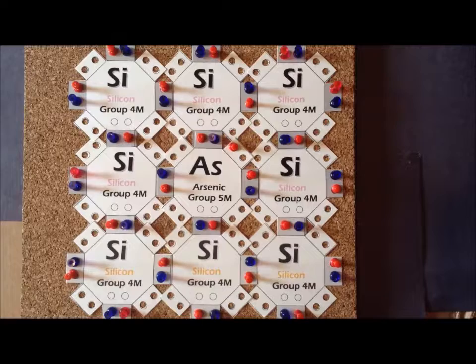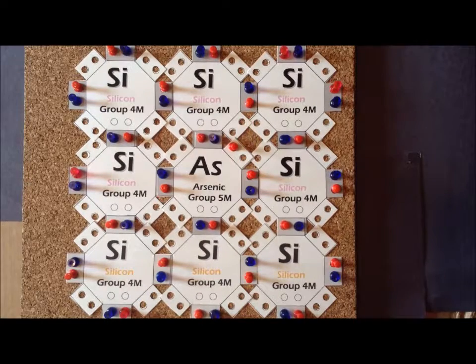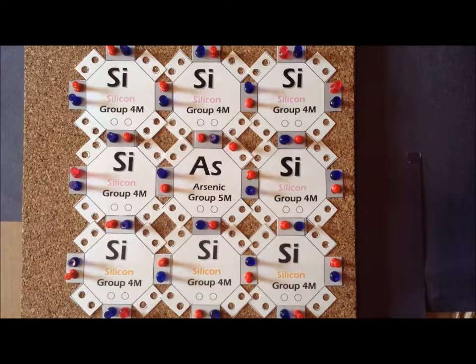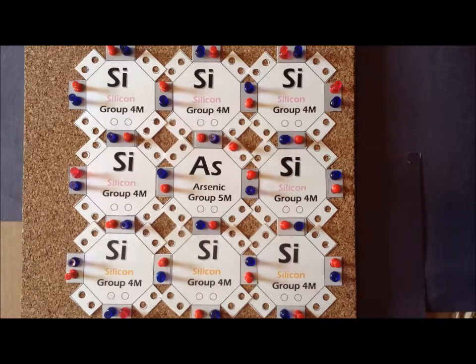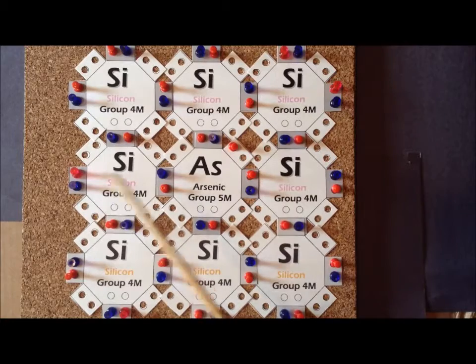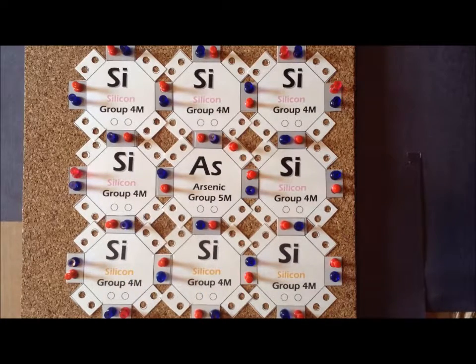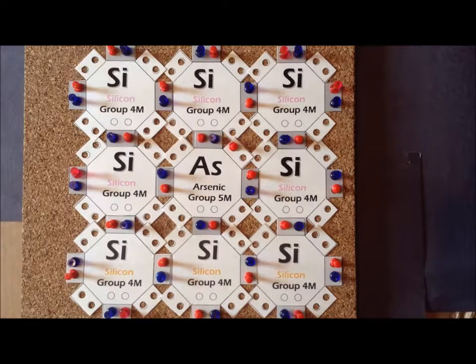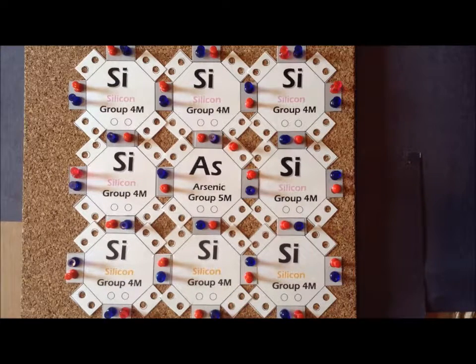Now, let us imagine that we replace one of the silicon atoms with arsenic. An arsenic atom has five valence electrons. Recall that if every single atom in the crystal were silicon, and silicon each has four valence electrons, we had precisely the correct number of electrons to fill up an octet around each silicon atom. But if we replace one of the silicons with arsenic, effectively, we now have one extra electron.